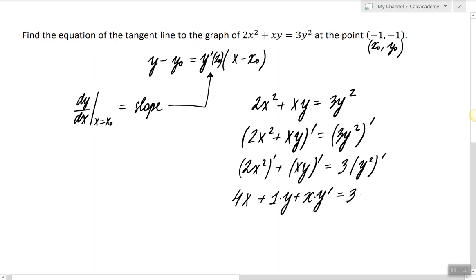And on the right side we have 3 times the derivative of y², which is 2y. But since y is a function, we have to multiply by the derivative of y. And now we have implicitly differentiated the given equation.